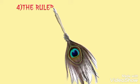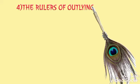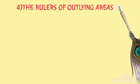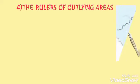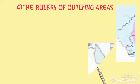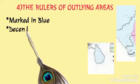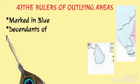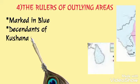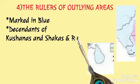Fourth, the rulers of the outlying areas, marked in blue on the map. Perhaps these were the descendants of the Kushanas and Shakas. The rulers of Sri Lanka also submitted to him and offered daughters in marriage.